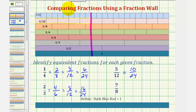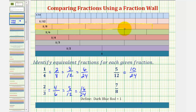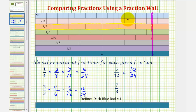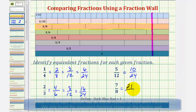For the last example, we have seven-eighths. To model seven-eighths, we'd have to use seven one-eighth rods. Using this fraction wall, the only train we can build would be using the one-twenty-fourth rods. Counting them, it takes twenty-one one-twenty-fourth rods to equal seven-eighths, so twenty-one-twenty-fourths is equivalent to seven-eighths.